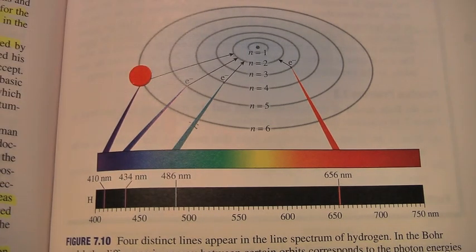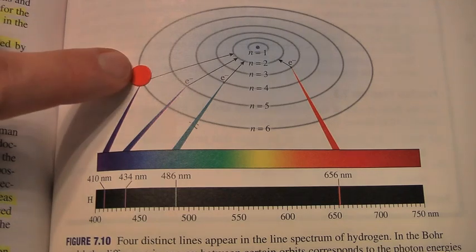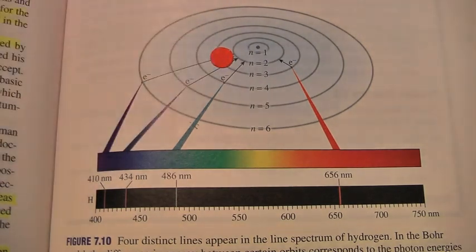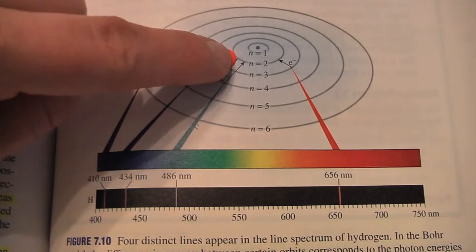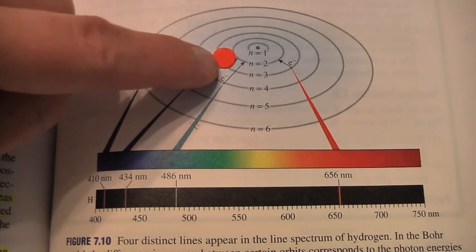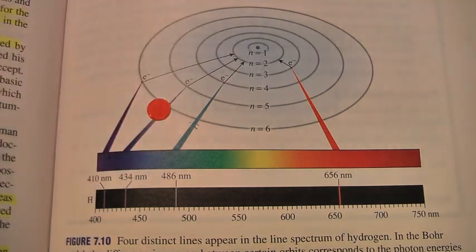If I have an electron in an outer orbit, and that electron moves to a closer orbit, a closer orbit to the nucleus, it will emit energy compared to an electron that begins at an orbit closer to the nucleus and moves out. That will absorb energy.